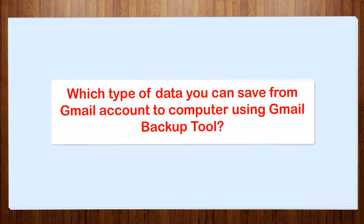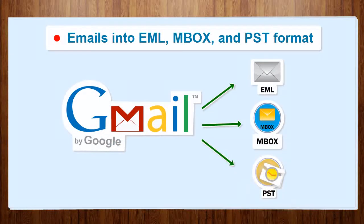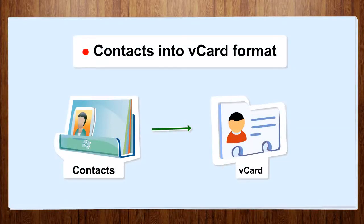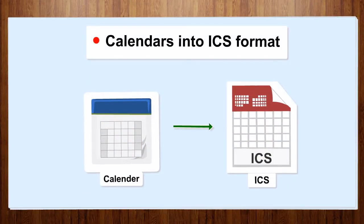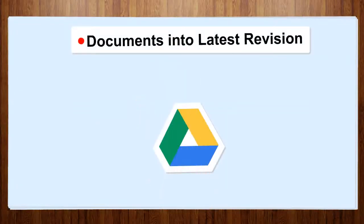Which types of data can you save from your Gmail account to your computer using the Gmail backup tool? You can save emails into EML, MSG, and PST format; contacts into vCard format; calendars into ICS format; and documents into their latest revision.